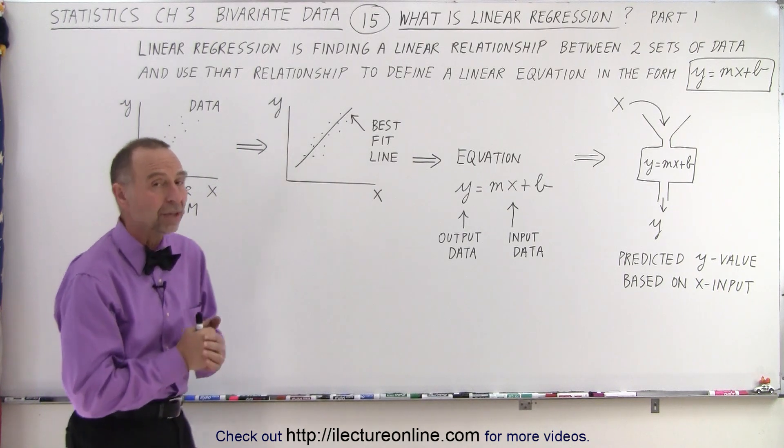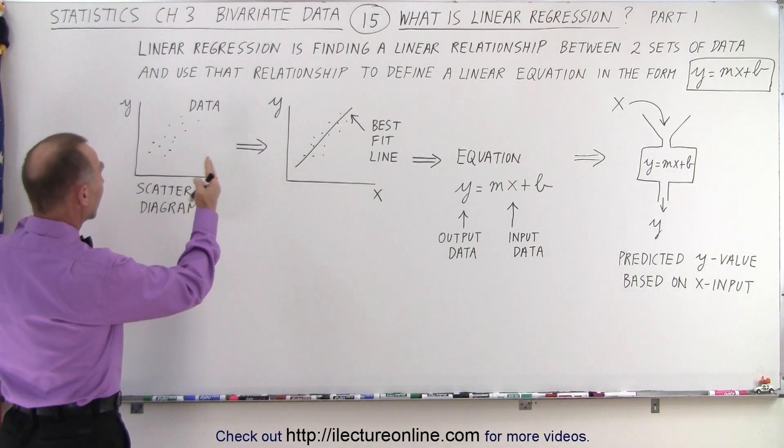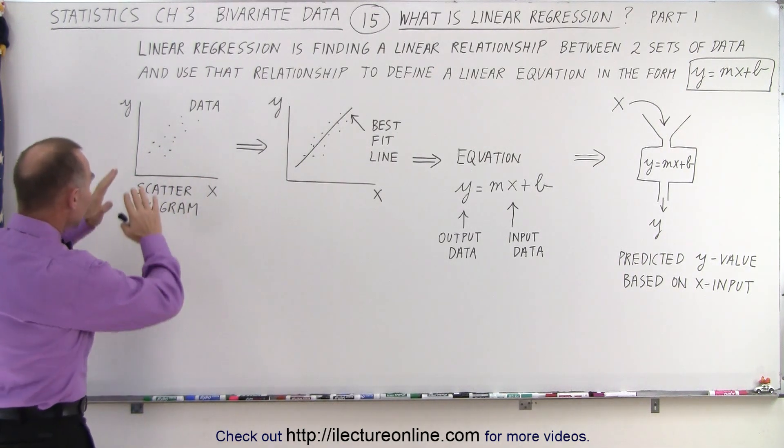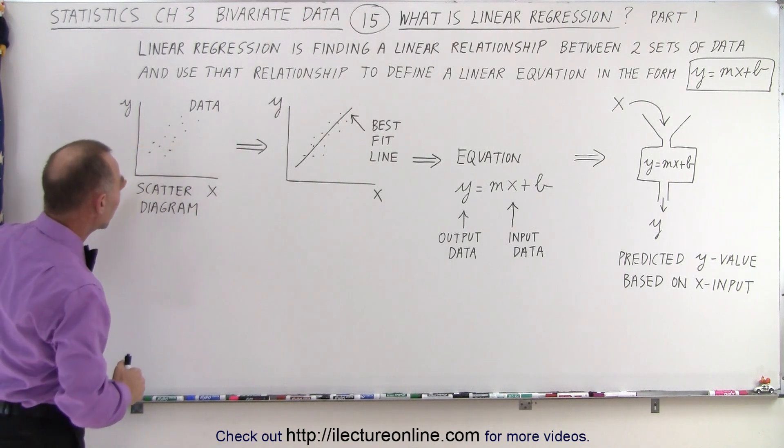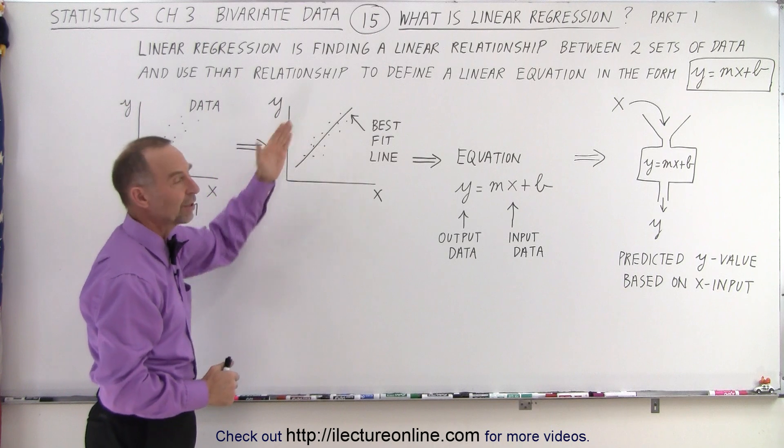So in a graphical format, we have some data that relates one variable to another. We place it on a scatter diagram and we begin to see a correlation. So then we draw what we call a best fit line.